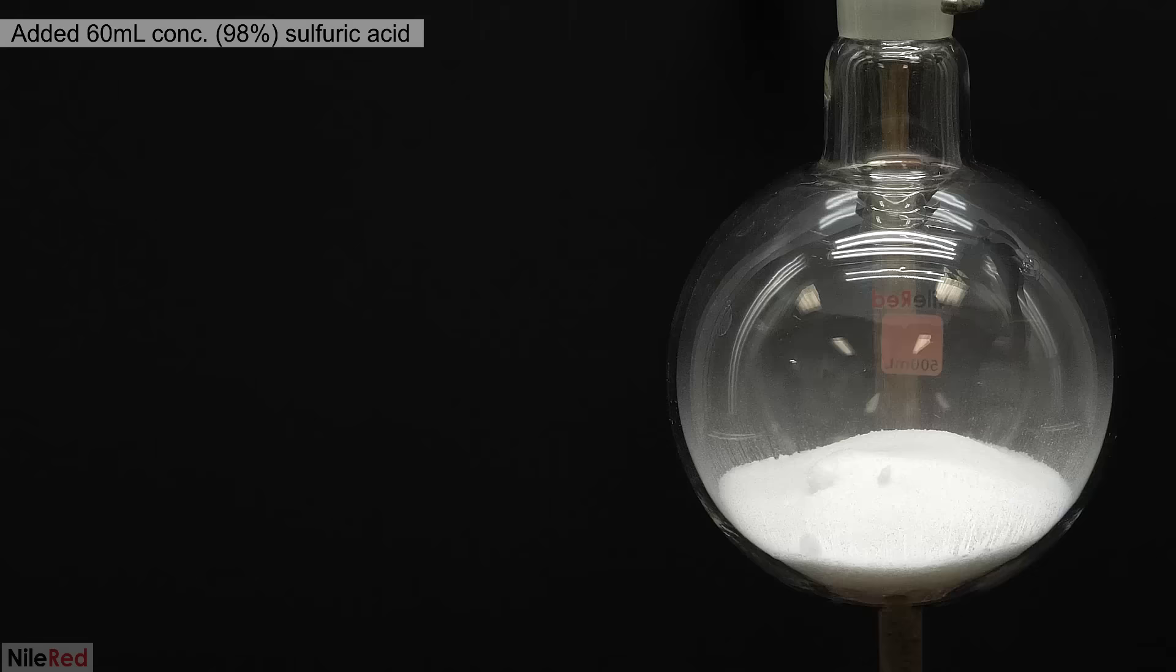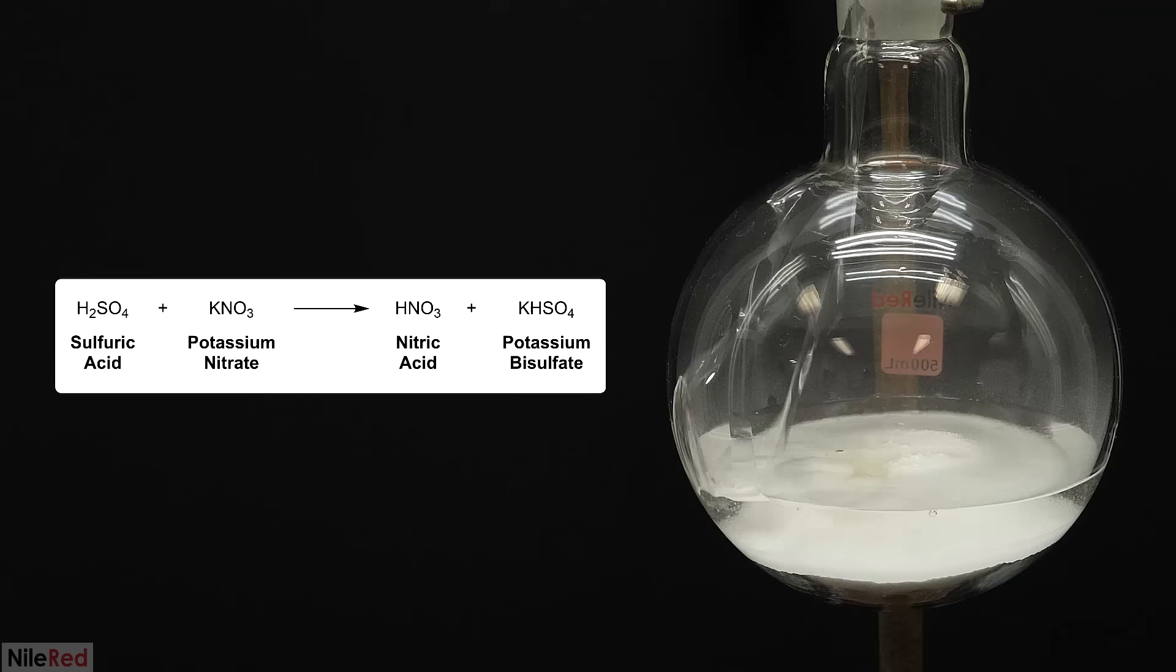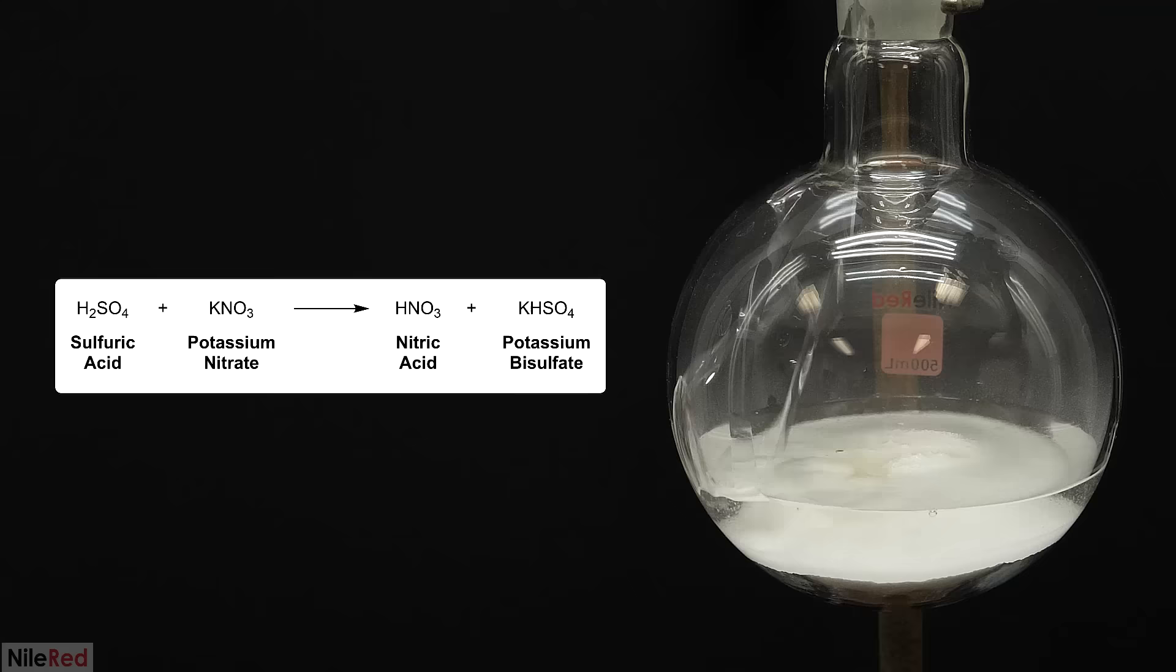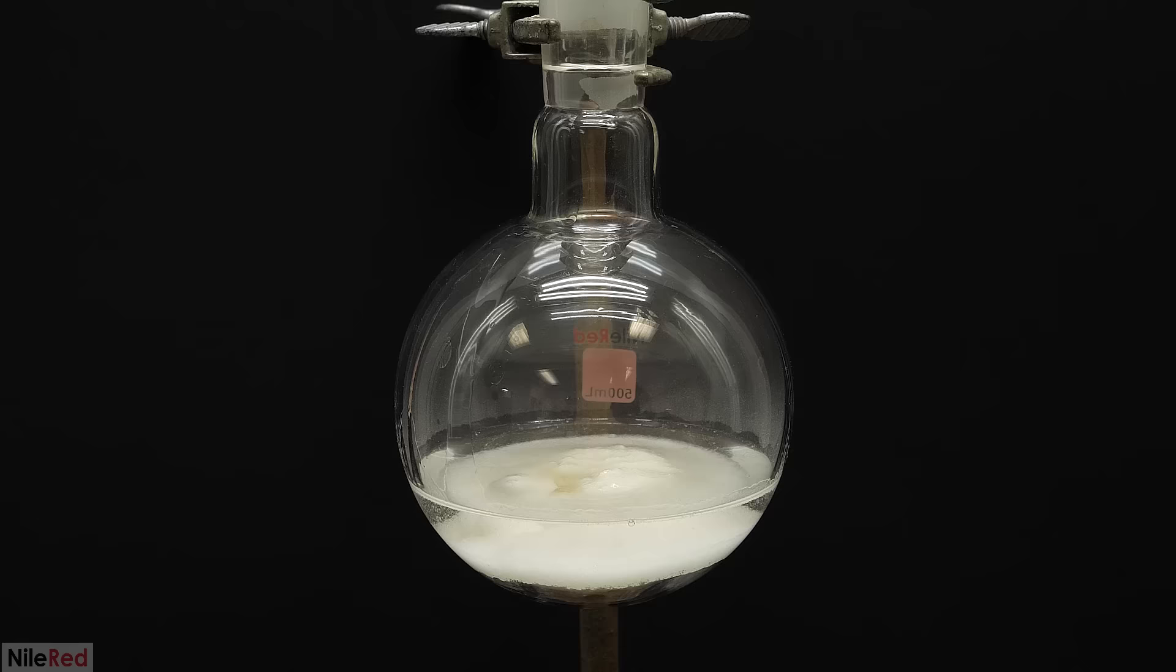So to start things off, I added 110 grams of potassium nitrate to a flask. Then on top of this, I poured in 60 milliliters of concentrated sulfuric acid. The moment it was added, it started reacting with the potassium nitrate to make nitric acid and potassium bisulfate. At room temperature though, this reaction is really slow. To get the reaction going, it'll have to be heated.